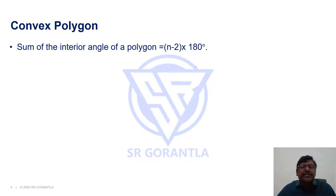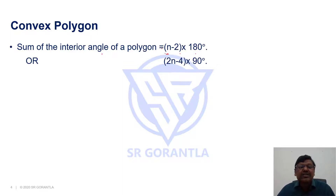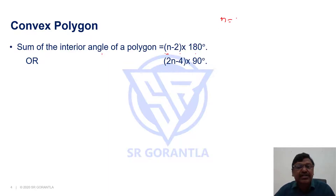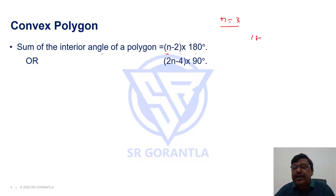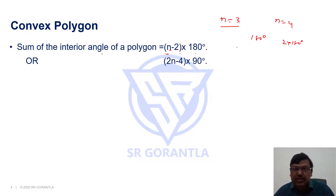In a convex polygon, what is the sum of the interior angles? The sum of the interior angles of a polygon is (n − 2) × 180, or equivalently (2n − 4) × 90 degrees, where n is the number of sides. For a triangle, n = 3: (3 − 2) × 180 = 180 degrees. For a quadrilateral, n = 4: (4 − 2) × 180 = 360 degrees. So the sum of angles in a quadrilateral is 360 degrees.